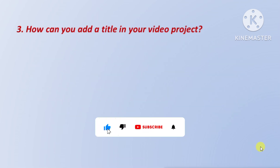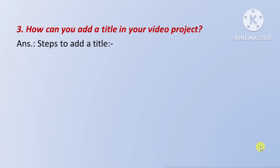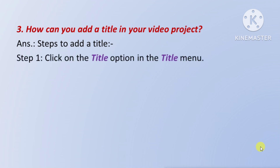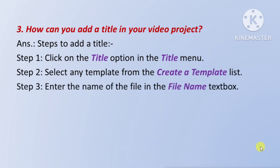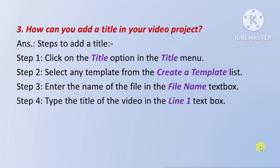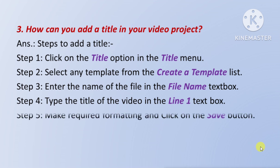Next question: how can you add a title in your video project — means aap apne video project mein ek title kaise add kar sakte hain? Answer — Steps to add a title: Step 1: click on the Title option in the Title menu. Step 2: select any template from the Create a Template list. Step 3: enter the name of the file in the File Name box. Step 4: type the title of the video in the Line 1 text box. Step 5: make required formatting and click on the Save button.